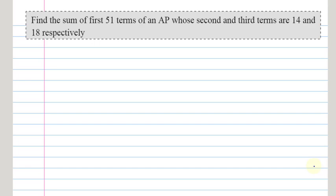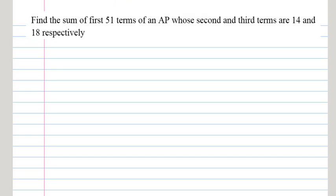Welcome to JSMS Academy. Let us observe a question. Find the sum of first 51 terms of an AP whose second and third terms are 14 and 18 respectively.